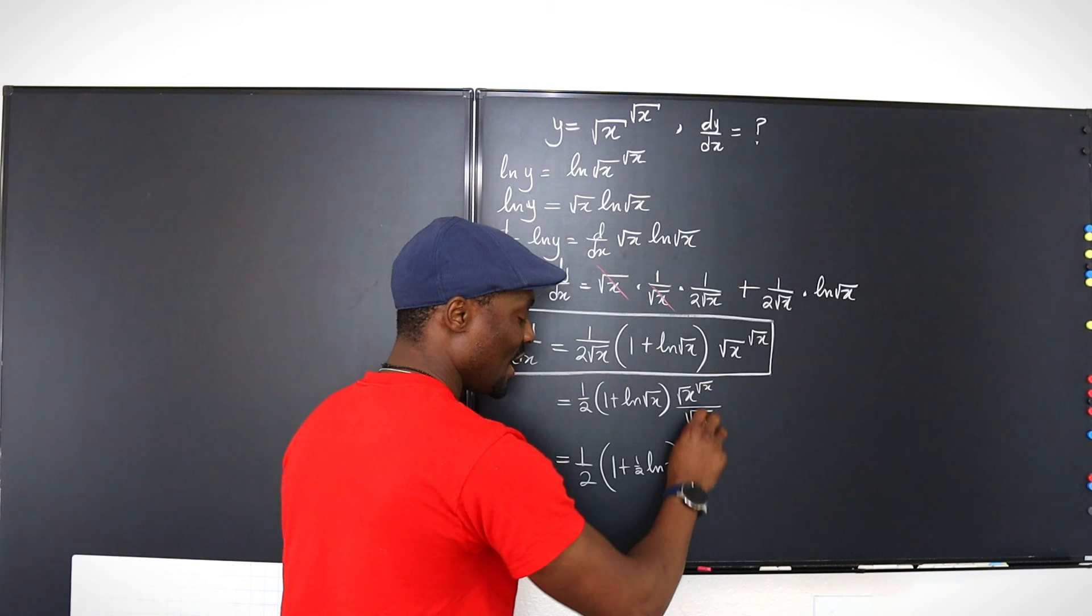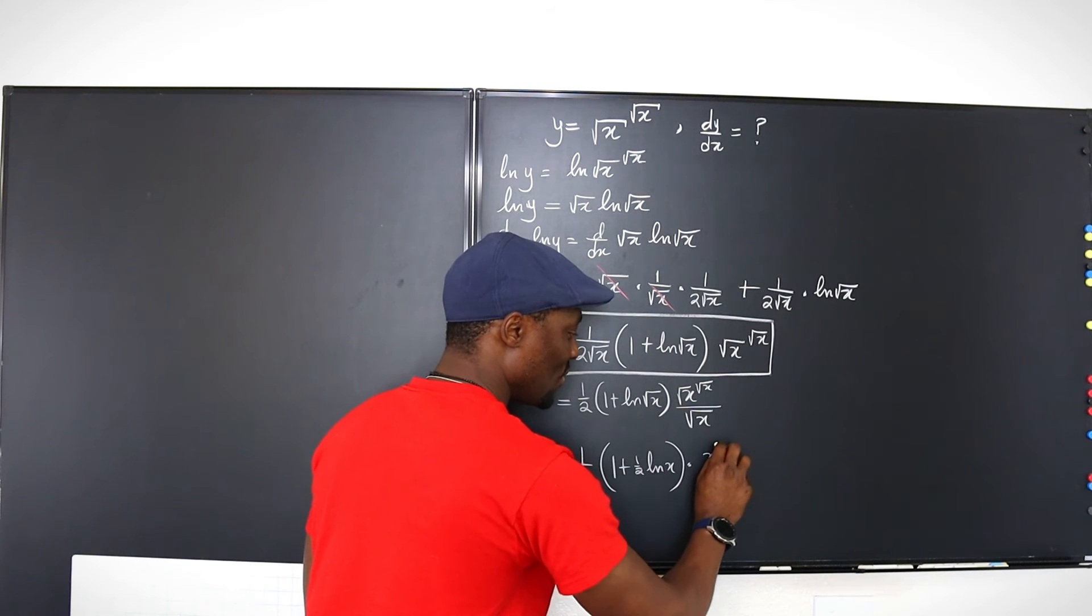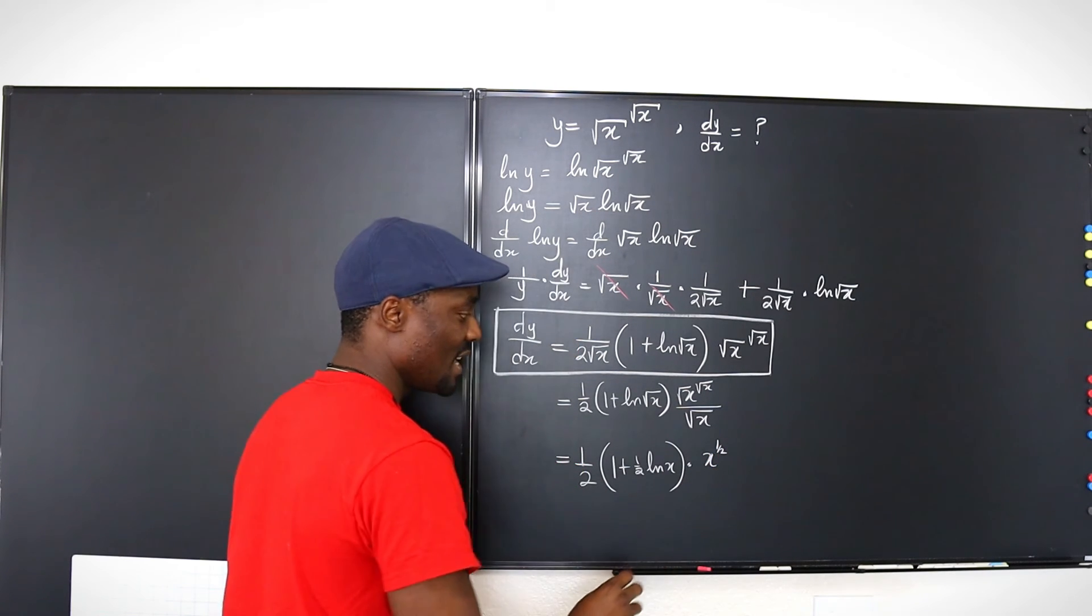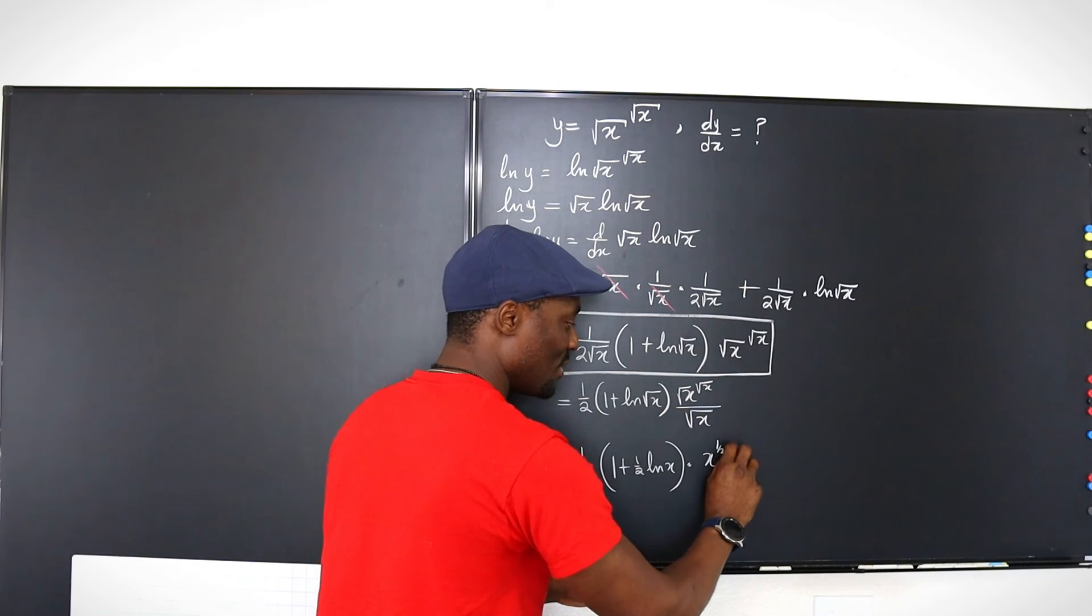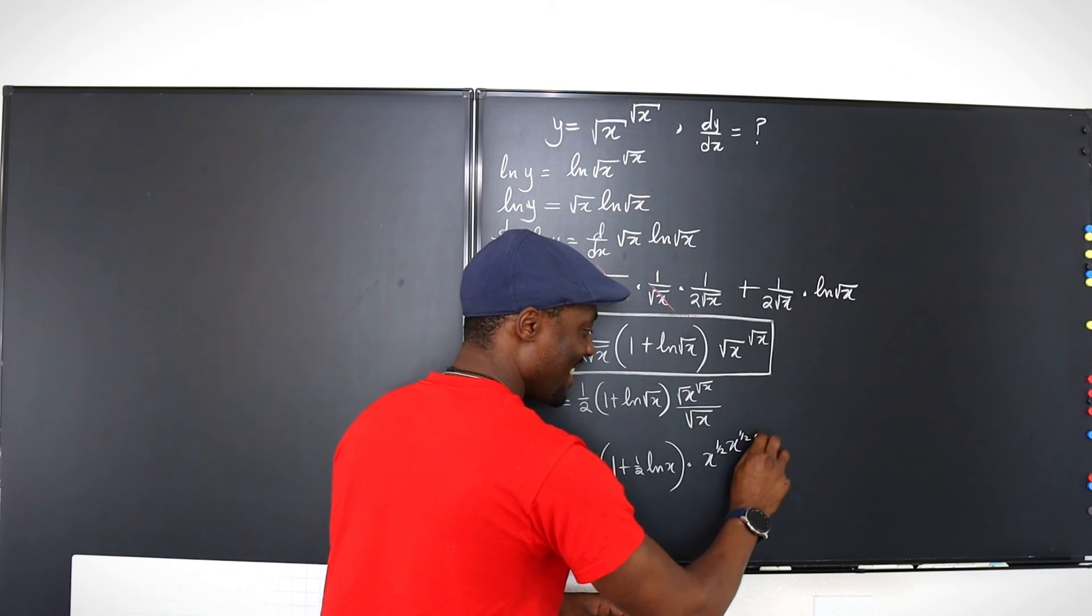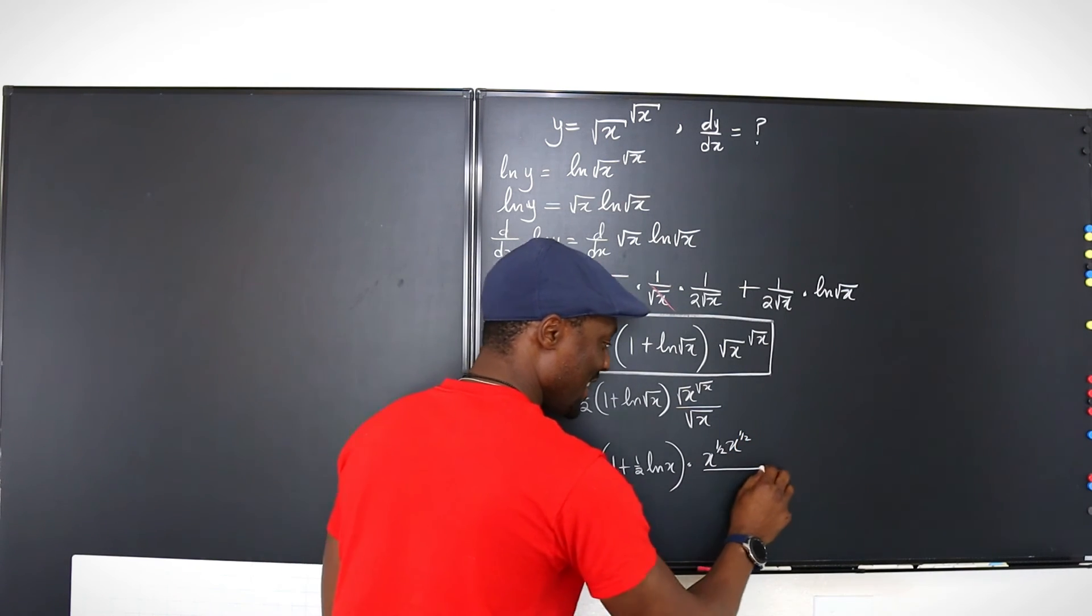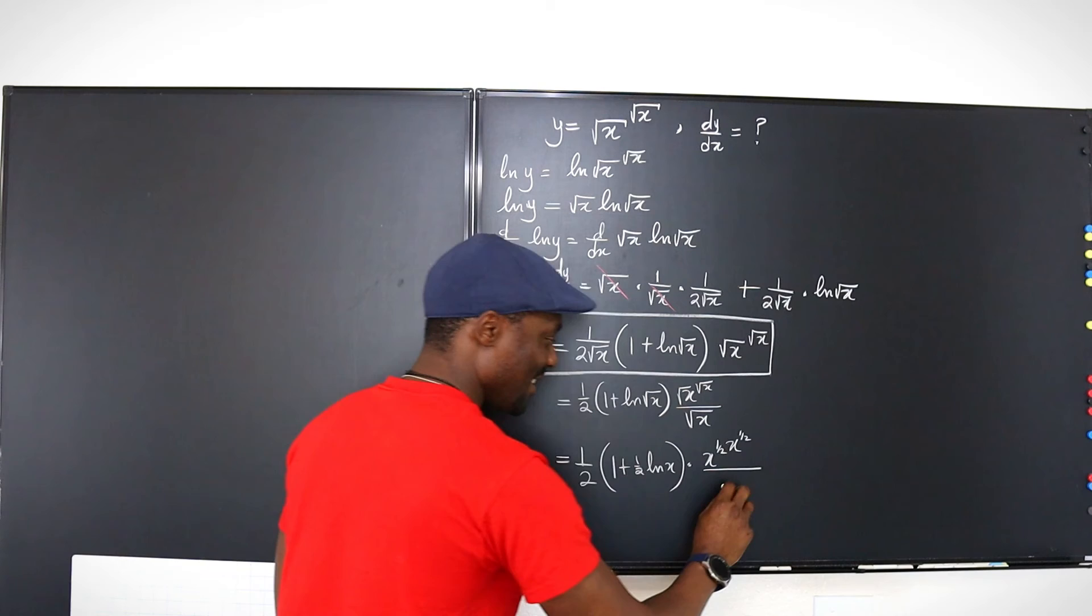And then on this side, you're going to have x to the 1 half. Multiplied by this. That's square root of x. That's going to be x to the 1 half. Now it's beginning to look beautiful. Wonderful.